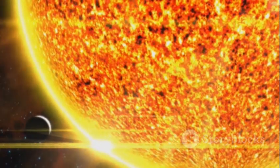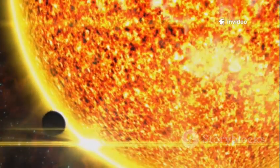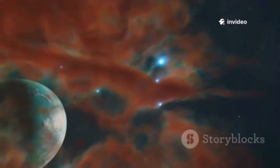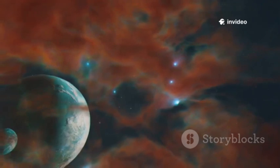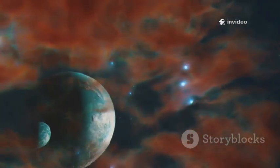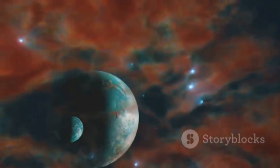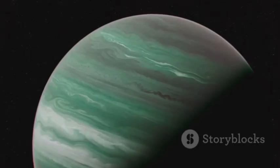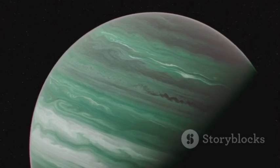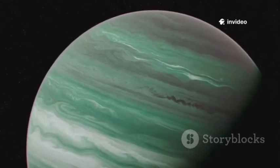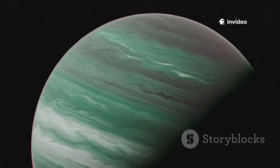Yet, remarkably, Neptune radiates more than twice the amount of energy it receives from the Sun. This excess energy is believed to be leftover heat from its initial formation, combined with ongoing gravitational contraction within the planet. This internal heat fuels its wild and unpredictable weather patterns, creating some of the most violent storms seen anywhere in our solar system.